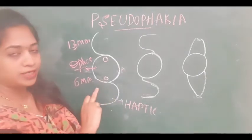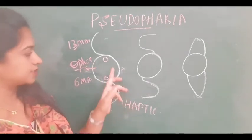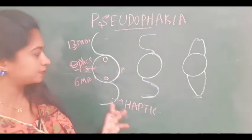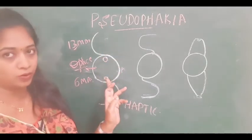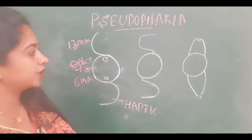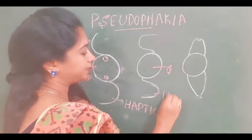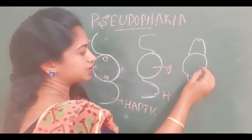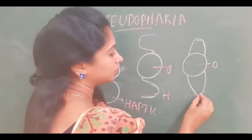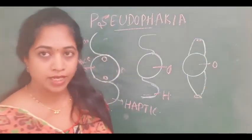It also has two holes to help in dialing the lens into position, and these are called dialing holes. So the parts are: the optic, leading haptic, trailing haptic, and the dialing holes. This is the anterior chamber IOL, which has again an optic and haptic. This is the iris claw lens with the optic and two claw-like fingers at the edges of the haptic.